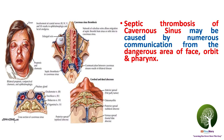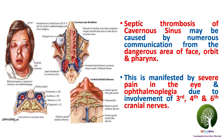Septic thrombosis of the cavernous sinus may be caused by numerous communications from the dangerous area of the face, orbit, and pharynx. This is manifested by severe pain in the eye and ophthalmoplegia due to involvement of the third, fourth, and sixth cranial nerves.